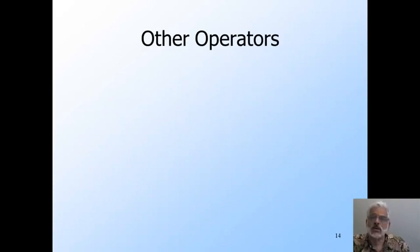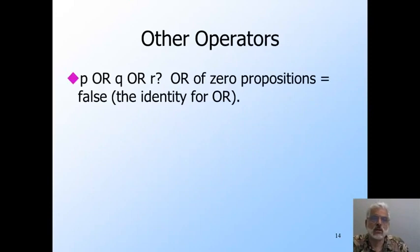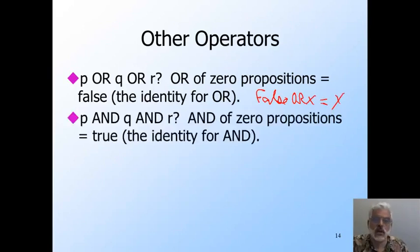Here are some other examples where the identity for the operator is the only thing that makes sense. The or of 0 propositional variables is false because false is the identity for or. That is false or x equals x. Similarly, the and of no variables is true because true is the identity for and.